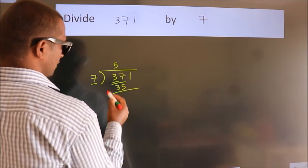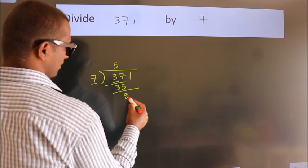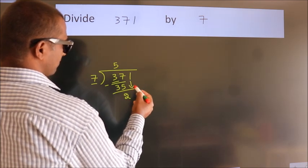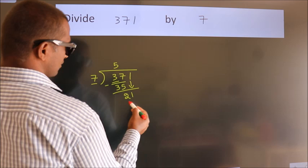Now we should subtract. We get 2. After this, bring down the beside number. So 1 down. So 21.